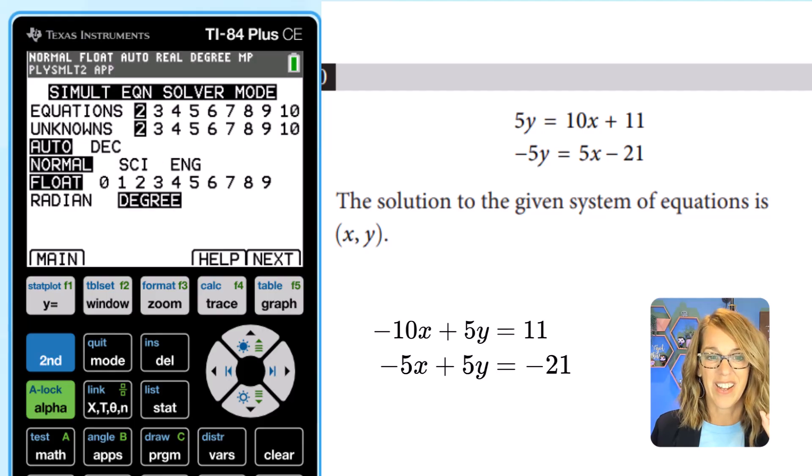Let's do number two. I've got it selected. I'm going to hit enter. How many equations? I do have two equations. I could change that but I do have two equations in this example. How many unknowns? That's my x and my y. I do have an x and a y. And I'm going to leave everything else as is. Let's hit the graph button to select next.